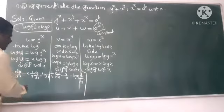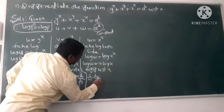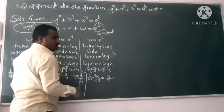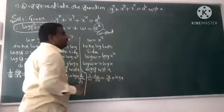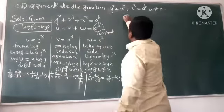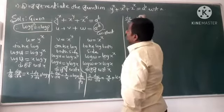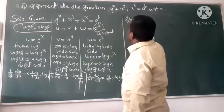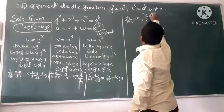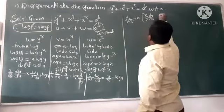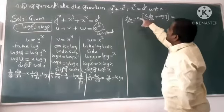For w: (1/w)·dw/dx = x·(1/x) + log x = 1 + log x, since the derivative of log x is 1/x. Now simplify du/dx by cross-multiplying: du/dx = u·[x/y·dy/dx + log y].